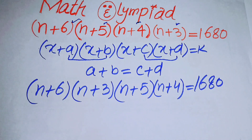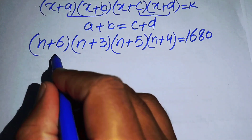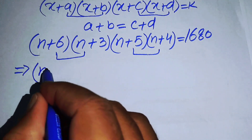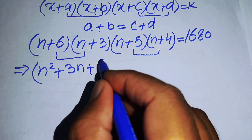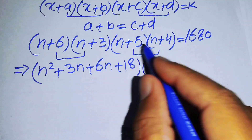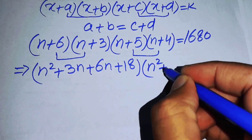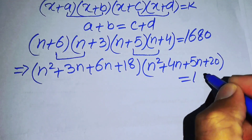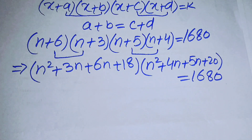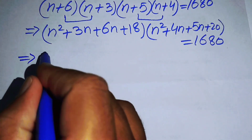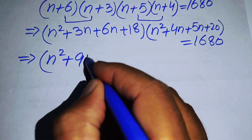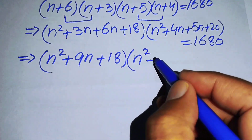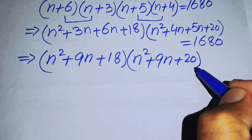Now we multiply the two pairs. (n+6)(n+3) gives n²+3n+6n+18, and (n+5)(n+4) gives n²+4n+5n+20. Simplifying, we get (n²+9n+18)(n²+9n+20) = 1680.